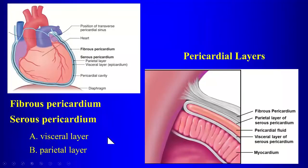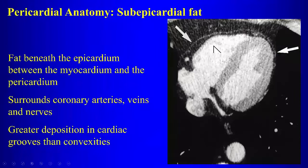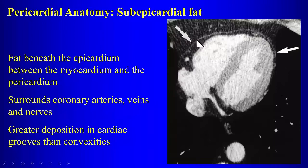You have the fibrous pericardium on the outside, and the serous pericardium. The pericardial fluid is in the space between the visceral and parietal layers of the serous pericardium. We also have subepicardial fat beneath the pericardium, between the myocardium and the pericardium, surrounding the coronary arteries, veins, and nerves. This fat helps visualize the pericardium — you can see that pericardial layer between the epicardial fat and the mediastinal fat.